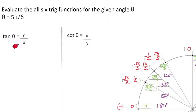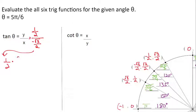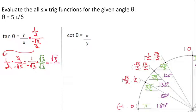Now let's look at tangent and cotangent. Tangent is y over x. We take our y-coordinate of 1/2 and divide by our x-coordinate of −√3/2. When dividing fractions, we flip the second and multiply — those 2's cancel, giving us 1/√3. But we have to rationalize the denominator again, multiplying by √3/√3. In the numerator, 1 × √3 = √3. In the denominator, √3 × √3 = √9 = 3. The negative is placed in the numerator, giving us −√3/3.